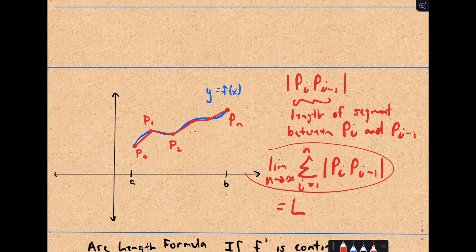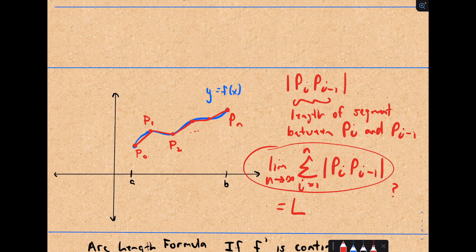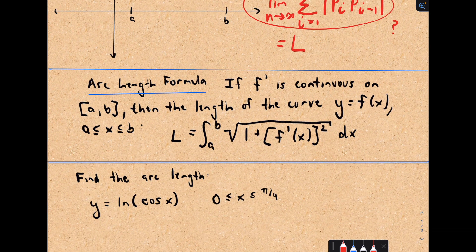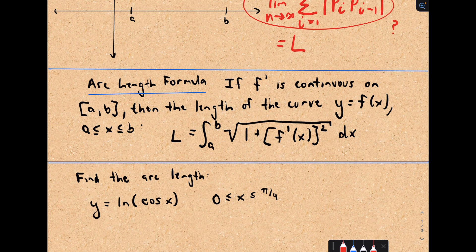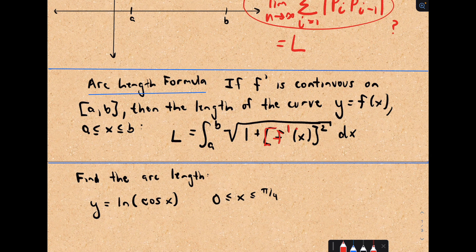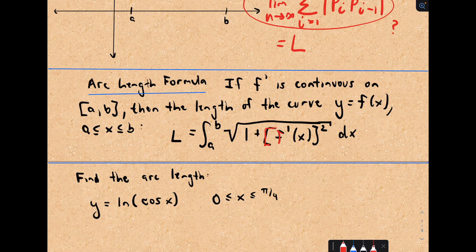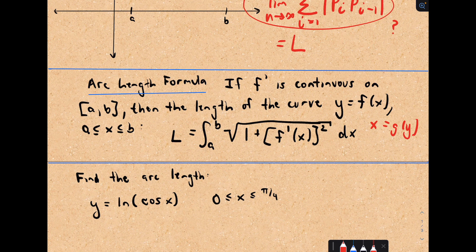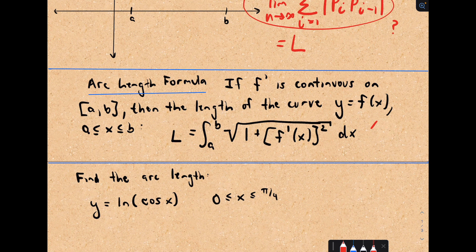Now, the problem is, how do we compute this? How do we work with this? Well, it turns out if you're clever and you use some calculus, you can come up with the following formula. If f prime is continuous on the closed interval a to b, then the length of the curve on that interval is L equals the integral from a to b of the square root of 1 plus f prime of x squared dx. You could have a curve of the form x equals g of y as well, just replace f prime of x with g prime of y, and your limits of integration would come from the y-axis.